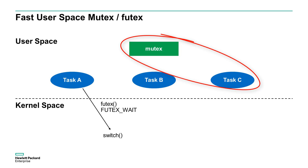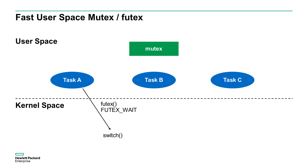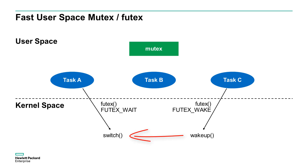However, if one of the tasks needs to sleep on the mutex, it can call the Futex system call with the Futex WAIT flag. Once the mutex is released, the task owner can call Futex with the Futex WAKE flag to perform the wake-up. So the Futex system call is only made to go to sleep or to perform the wake-up.